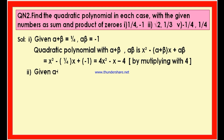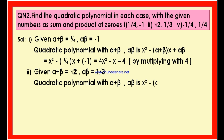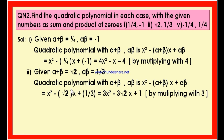For part (ii), alpha plus beta is root 2 and alpha into beta is 1 by 3. Using the formula, the polynomial is x squared minus root 2 into x plus 1 by 3. Multiplying all three terms by 3 to clear the denominator: 3x squared minus 3 root 2 x plus 1. This is the required quadratic polynomial.